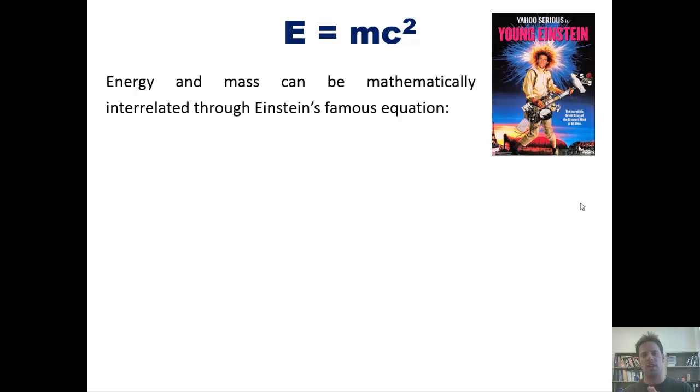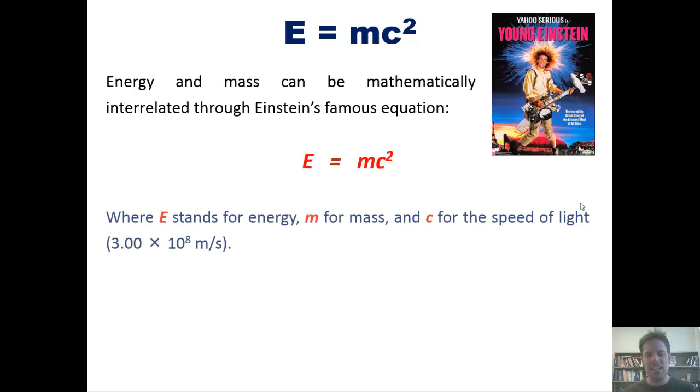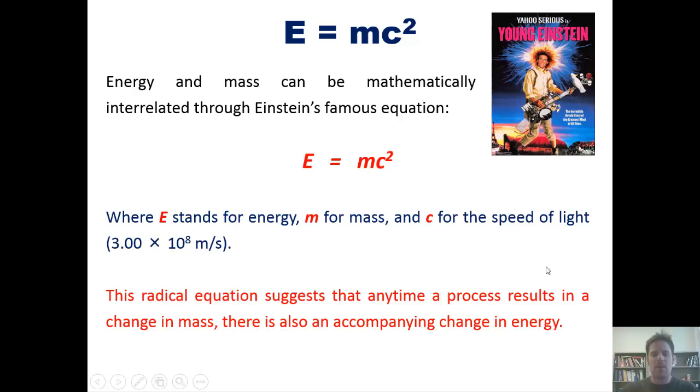Now on to another subject, E equals mc squared, which is, of course, a famous equation devised by Einstein. Here's a picture of him when he was younger. Now, energy and mass can be mathematically interrelated using this famous equation, where E stands for energy, M for mass, and C for the speed of light, which happens to be 3 times 10 to the 8th meters per second.